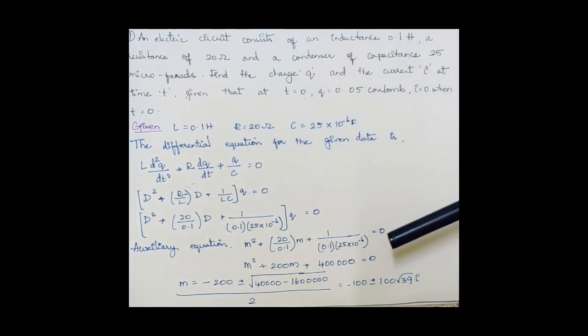Now we are substituting the given parameters, and while trying to convert it into an auxiliary equation, we get m² + 200m + 400000 = 0.